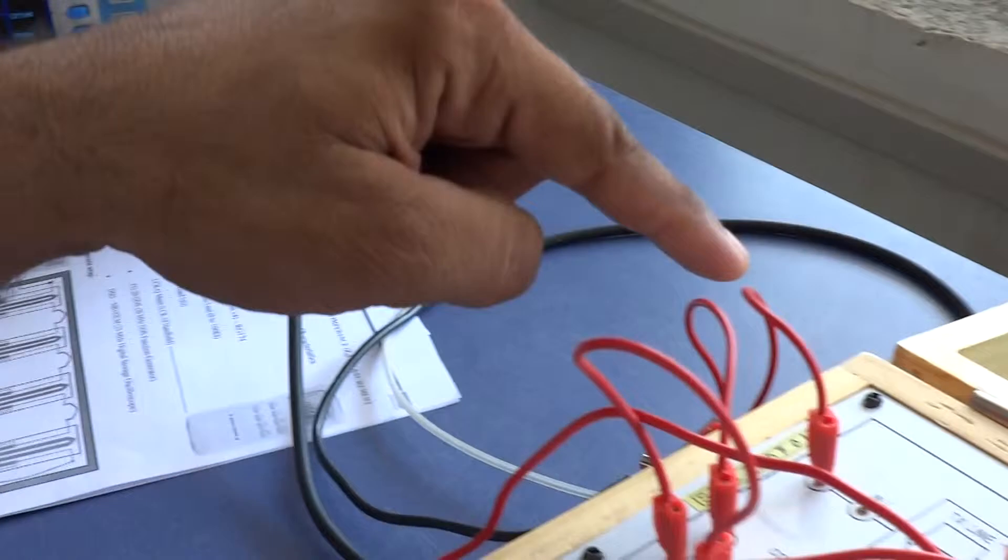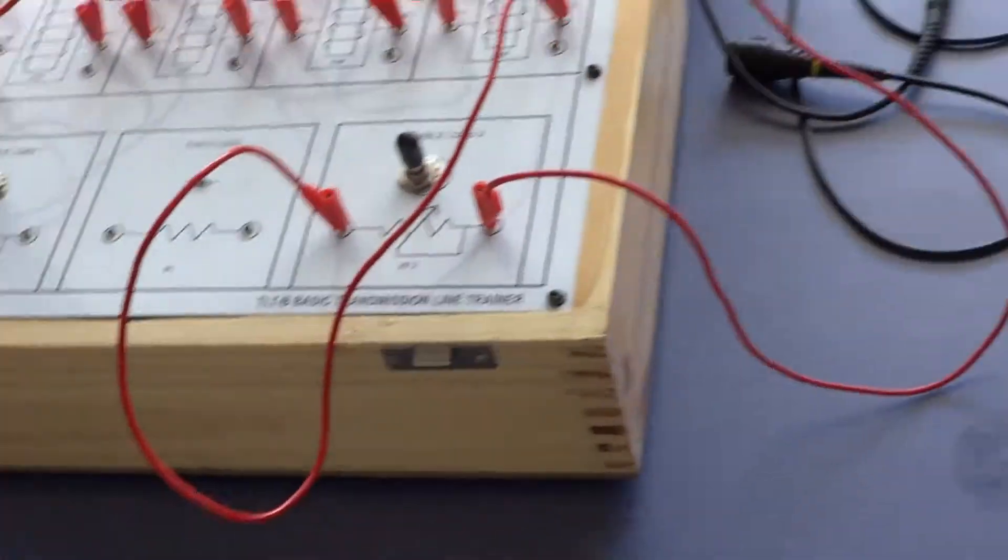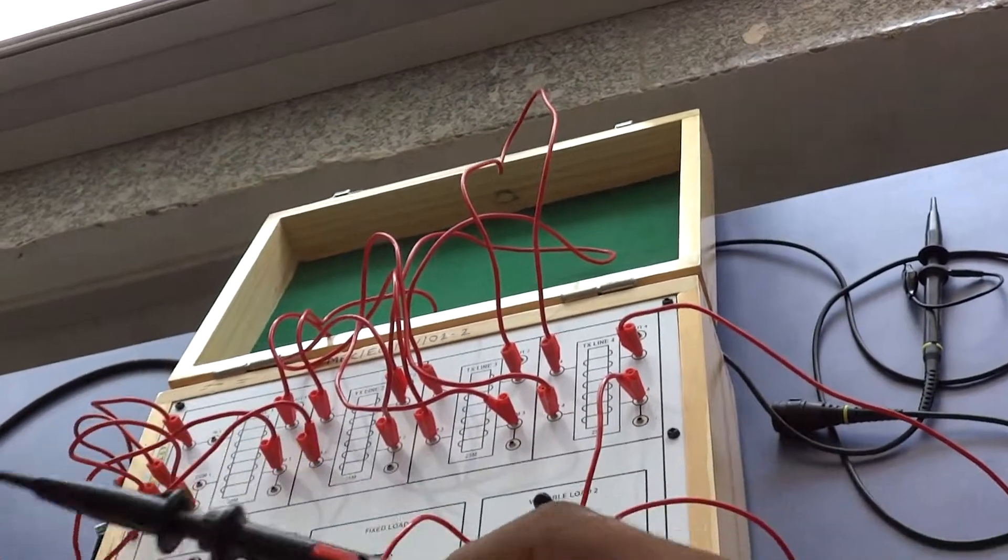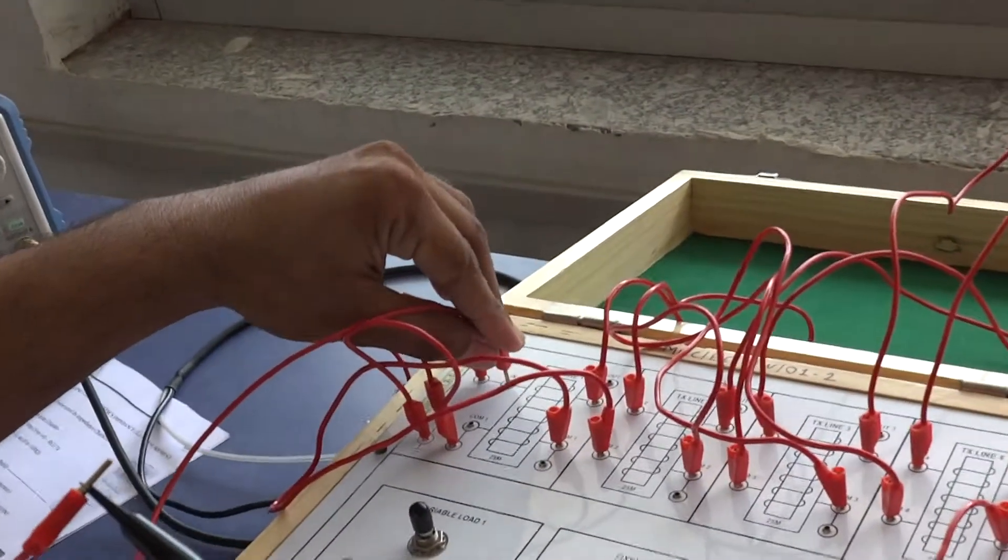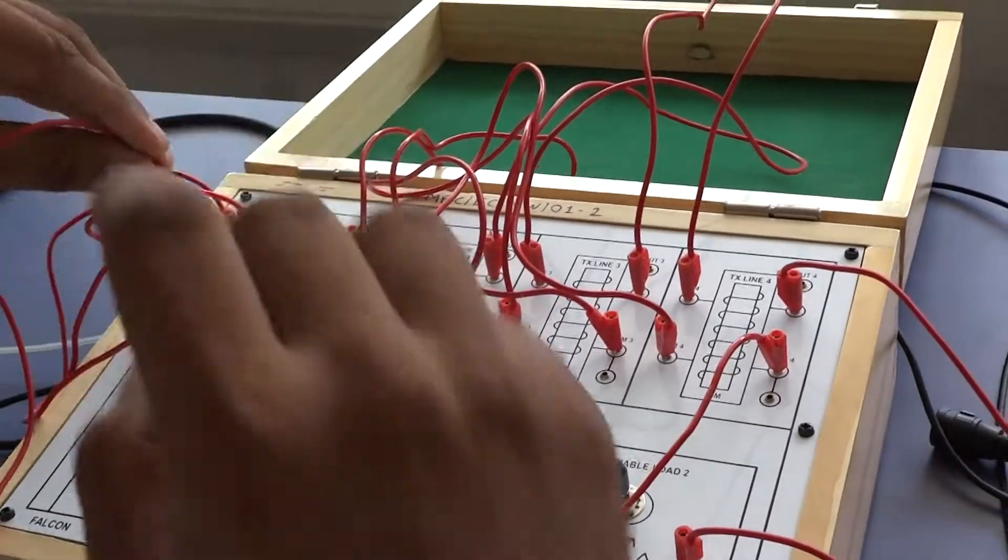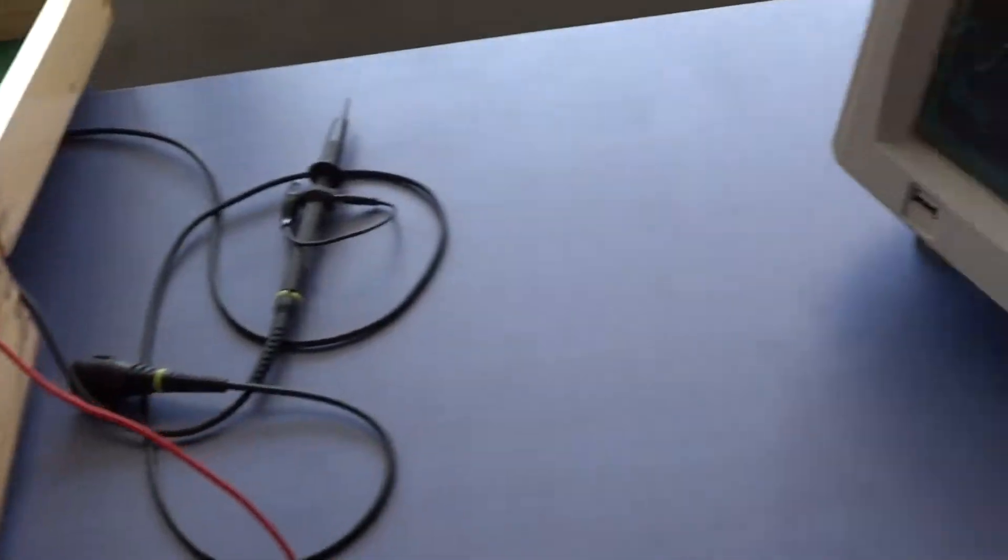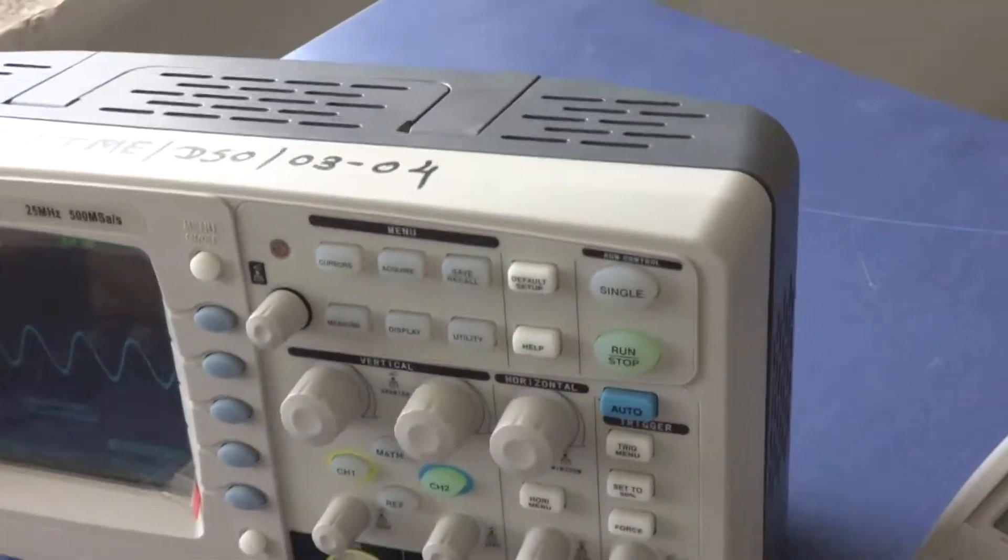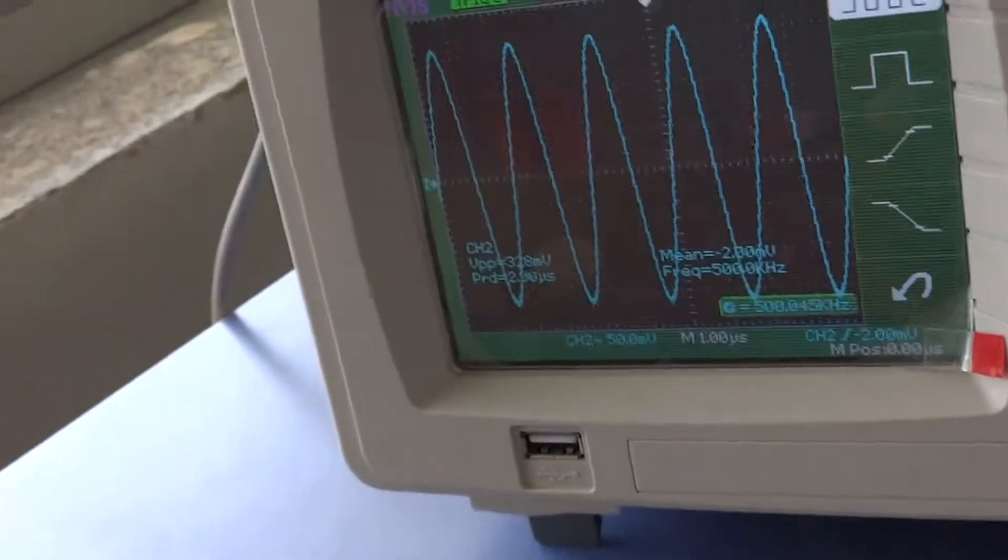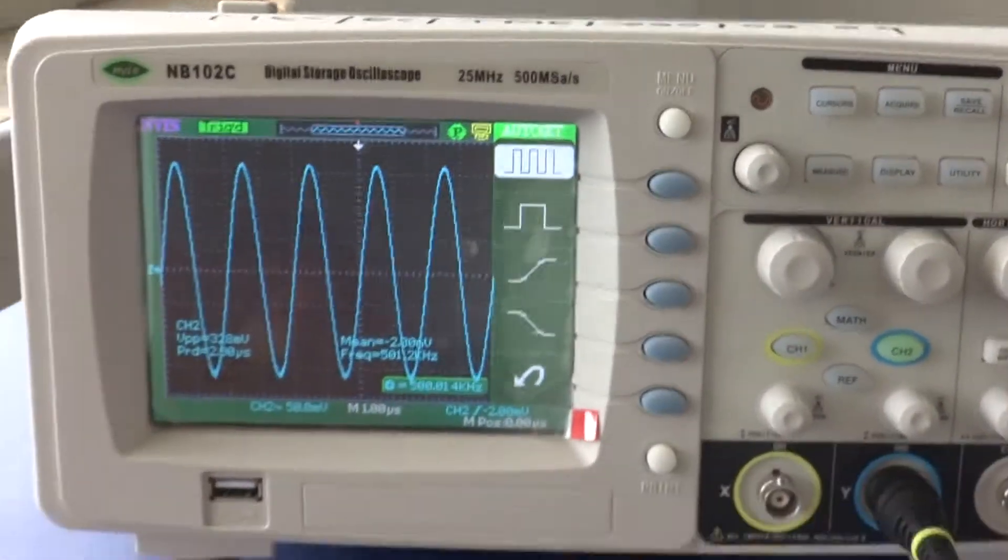So, signal will propagate from here to here. Now, this is the output cable. I will put my output cable positive here and ground here. So, we are getting the signal generator over here.